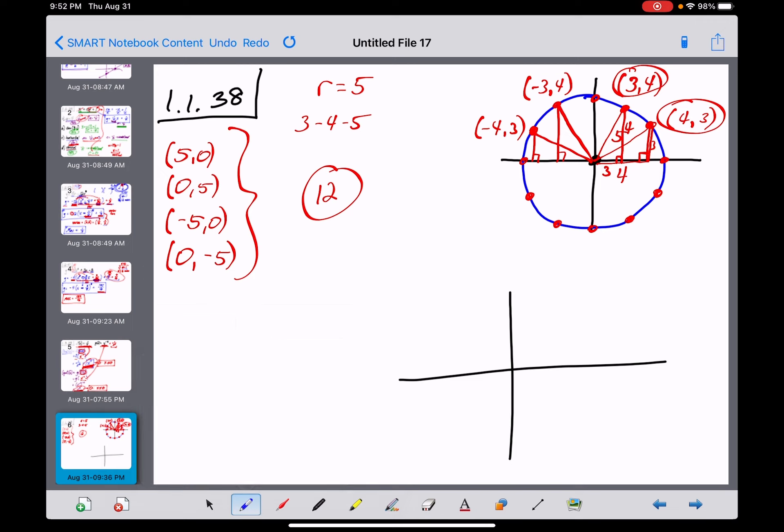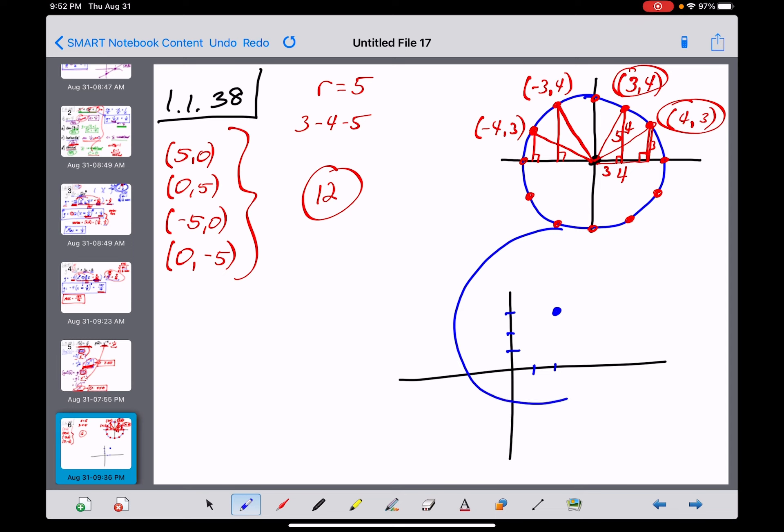But if we jumped to the ordered pair (2,3), so 2 units to the right and 3 units up, now our starting point is right here. So again, I'll draw a circle with a radius of 5 from that point. And once again, we're going to get points right above, right below, straight right, and straight left from the ordered pair (2,3).